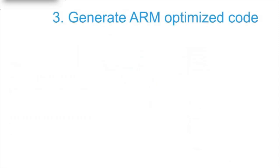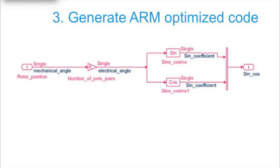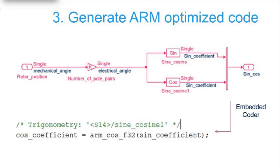Now we can generate the C code to run on the STM32 processor. MATLAB generates standard ANSI C and C++ code, but with the STM32 support package we have the ability to use a feature called code replacements. In this example, the Simulink model performs a transformation using a sine and cosine function. When code generation starts with the Embedded Coder, the standard C implementation of the sine function is replaced by the optimized version from the DSP library, thus increasing the speed of the algorithm.